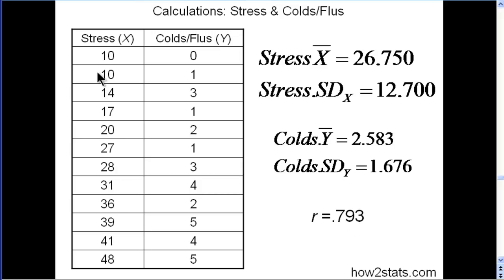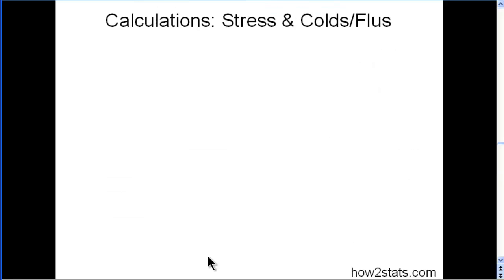So as stress scores increase, number of colds also increase. And it's a correlation of 0.79. That's a very strong correlation. So now that we have those estimates of mean, standard deviation, correlation, we can figure out our slope.